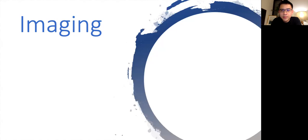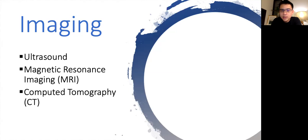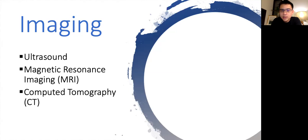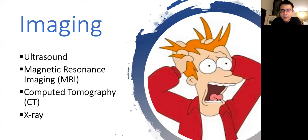When it comes to imaging for uterine fibroids, there are many different available modalities — for example, ultrasound, magnetic resonance imaging or MRI, computed tomography or CT, and x-rays. So how do you know which modality to use and when? Let me go through the modalities one by one.